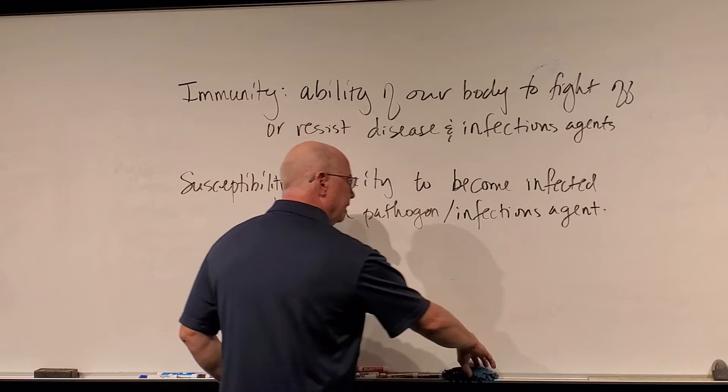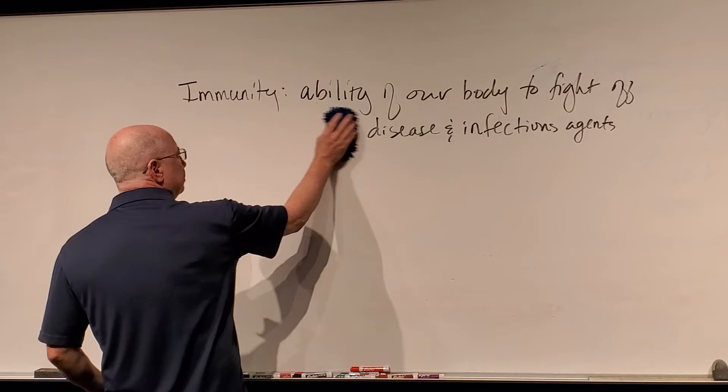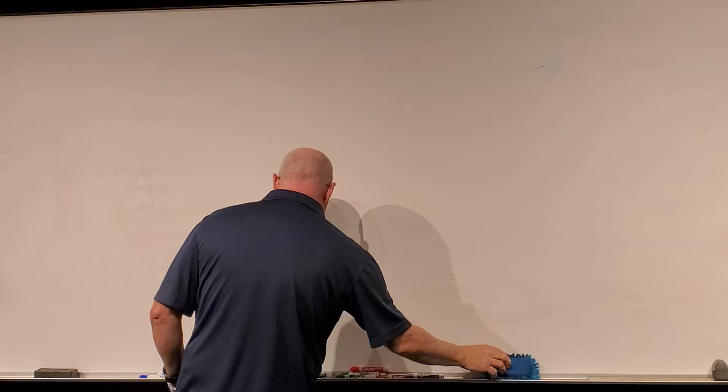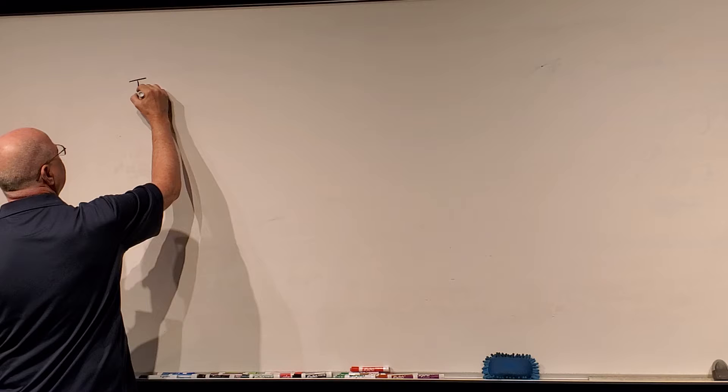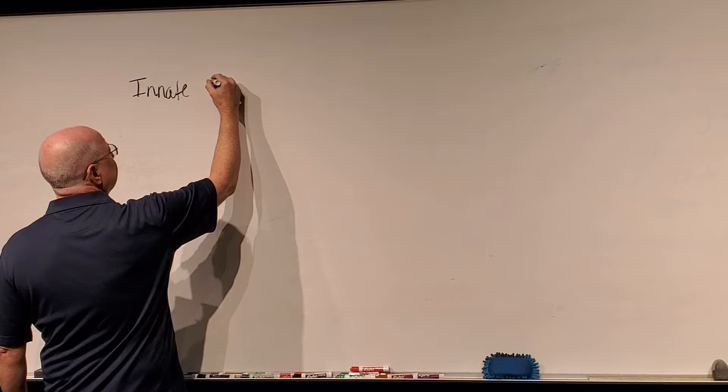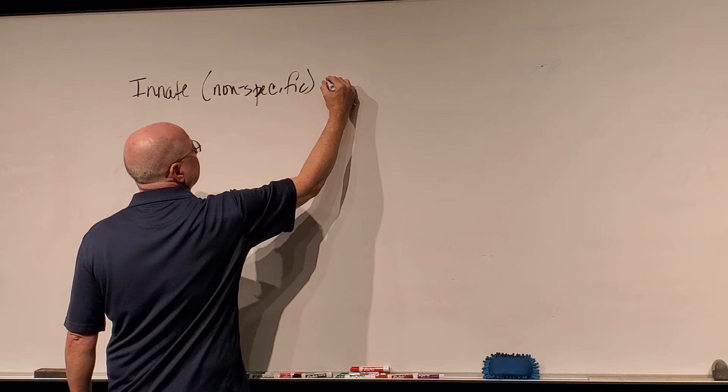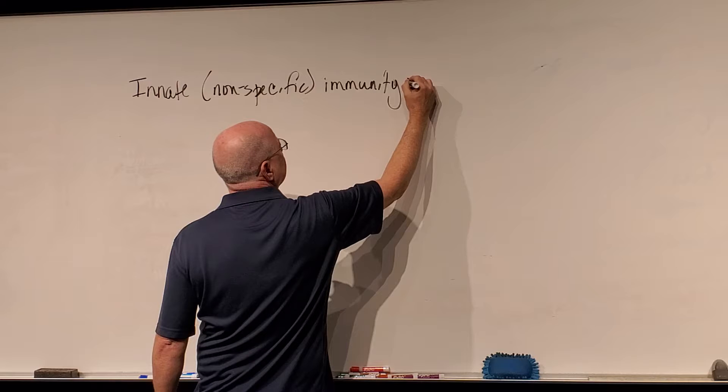Now I'm going to mention both branches of our immune system: the innate and what we call acquired immunity. They each go by multiple names, so I'll try to give you all of them because you may see them presented differently in different books. We call it innate immunity, and it's also called non-specific immunity.